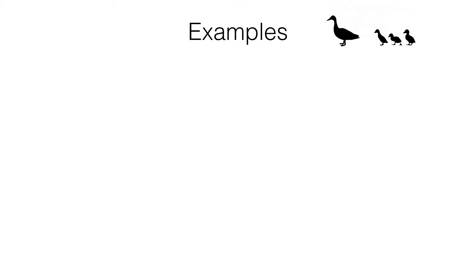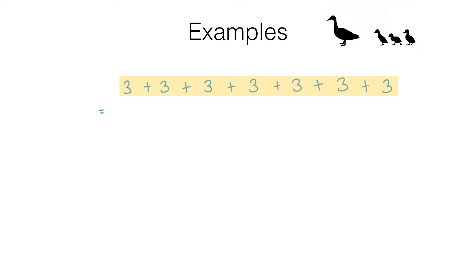In this video we're going to be looking at indices. Before we get into that, let's just have a quick look at this. Suppose I wanted to do this addition — now this is a pain to write out. Is there a shorter way to write that out? Hopefully you know that is just the same as 7 multiplied by 3. We can use the multiplication symbol to represent repeated addition, and this is much shorter and easier to write.